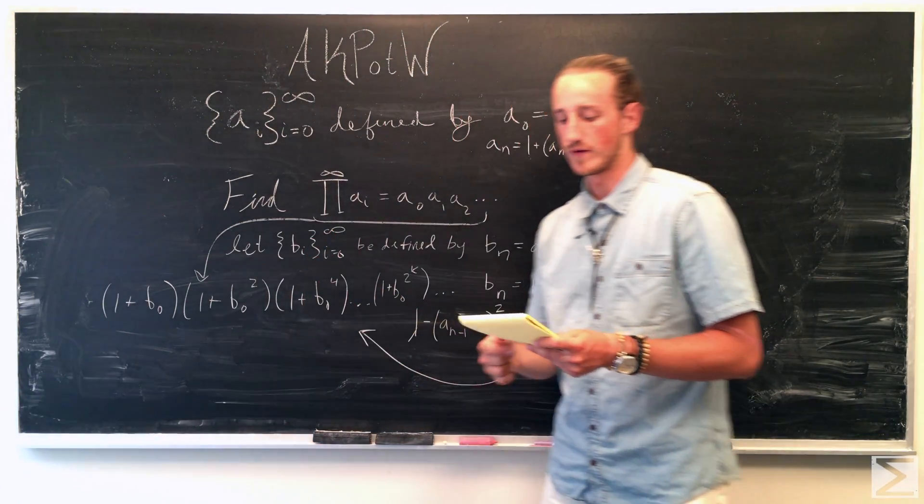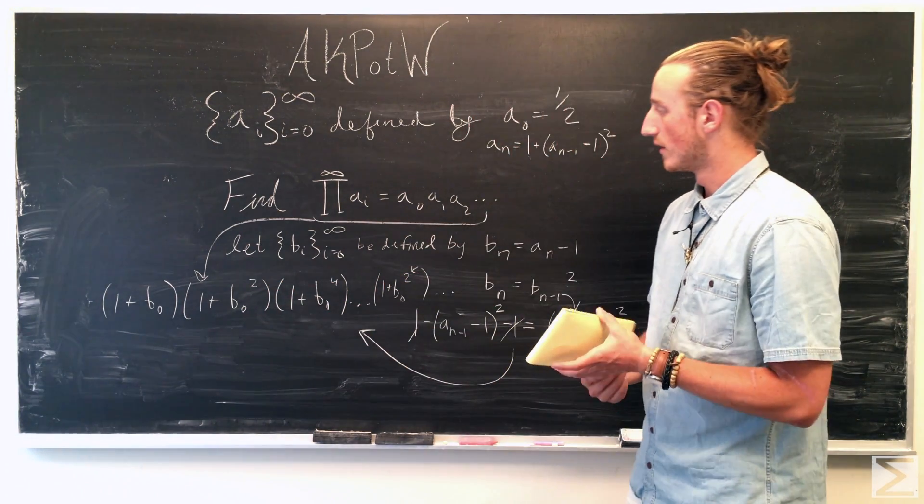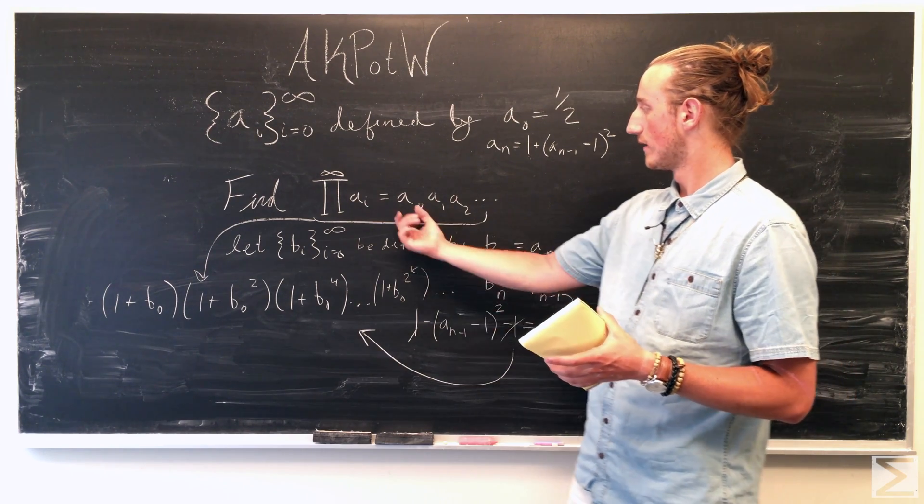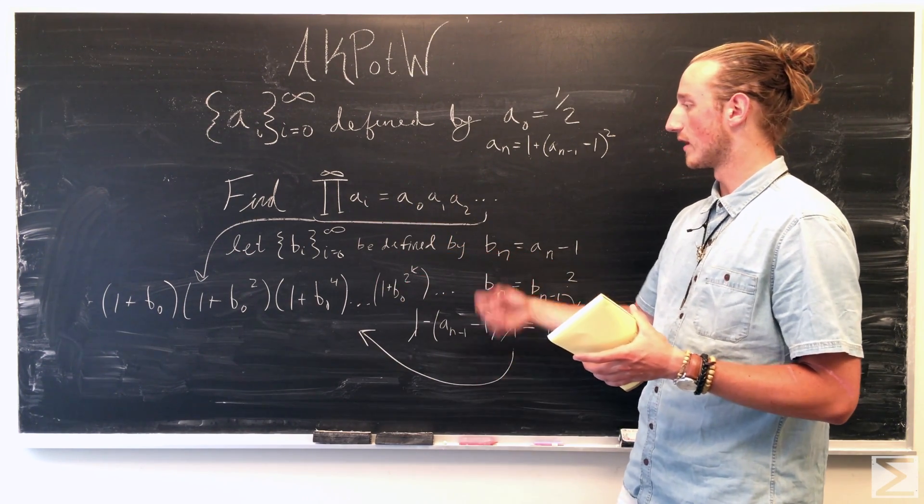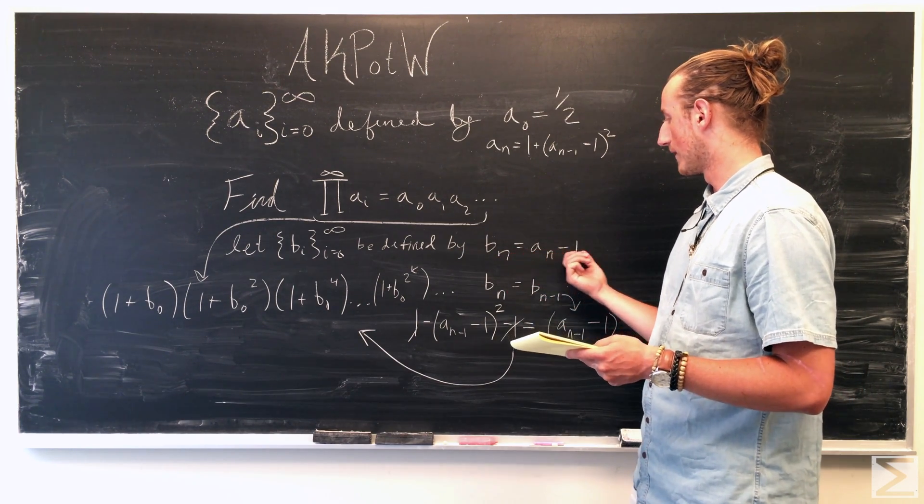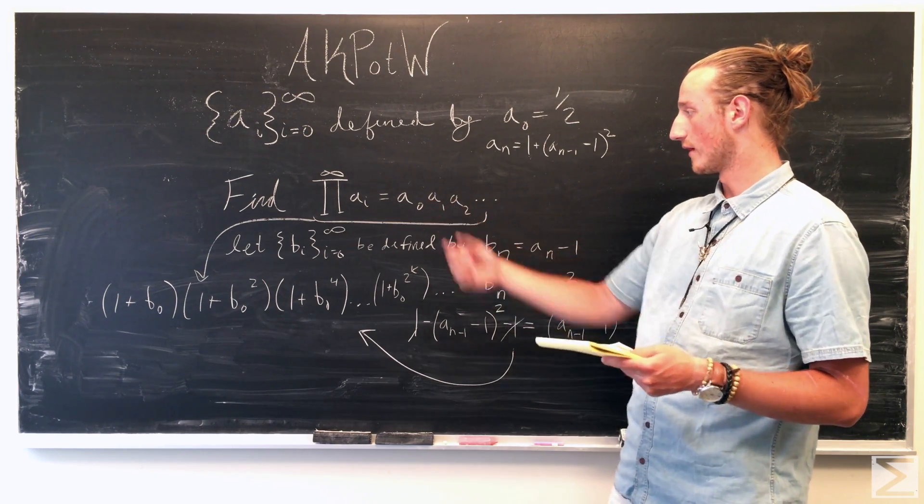So the new infinite product can be represented using our new sequence b. So we know that a naught is going to be our new b naught. So b naught is a of n minus one. So b of n plus one is going to be equal to a of n.